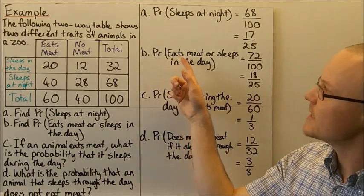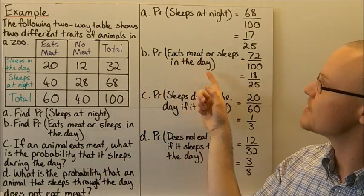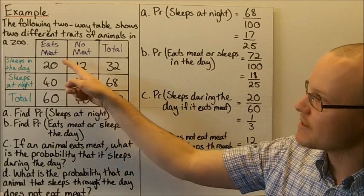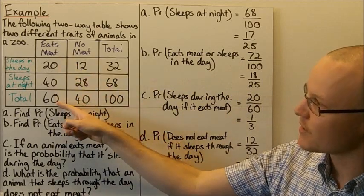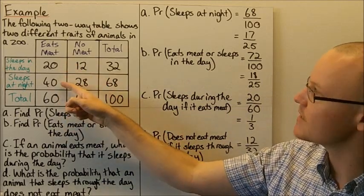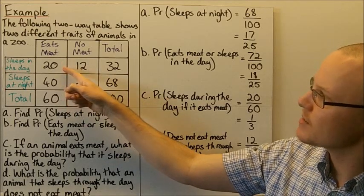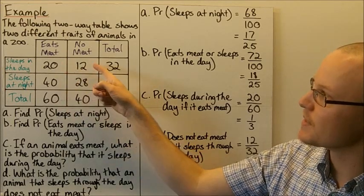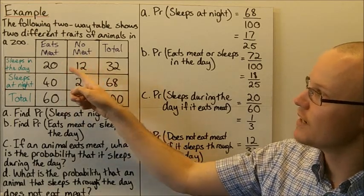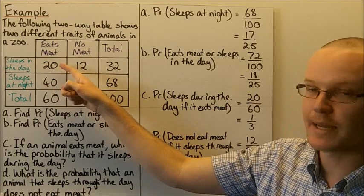The probability that an animal eats meat or sleeps in the day: the animals that eat meat total 60. The animals that sleep in the day are split across two cells — 12 and 20 — but these 20 already eat meat.